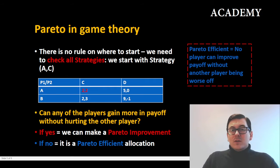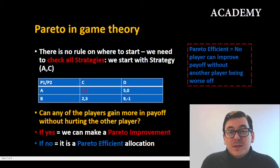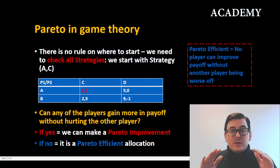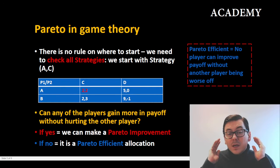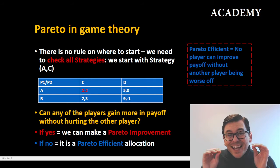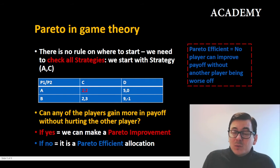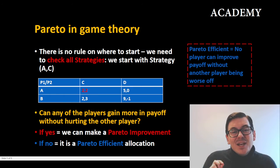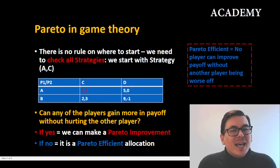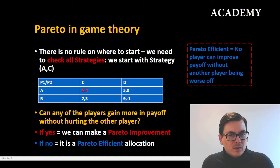We can start from strategy AC — there's no rule about where to start because we need to analyze all four conditions. In strategy AC, each party gets a payoff of two. What we should ask ourselves now — highlighted in yellow — is: can any of the players gain more in payoff without hurting the other player's payoff?